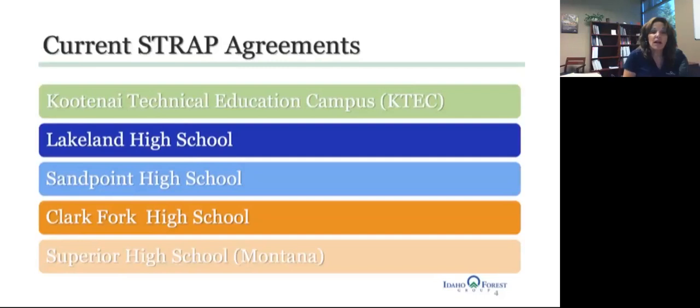First of all, there must be a School to Registered Apprenticeship agreement signed between the high school and the employer. For the student, they must be in good academic standing—both their grades and their attendance. They must be enrolled in a related career and technical course. Most of our students come from a welding course, a diesel course, or industrial mechanics. The student's parent or guardian must sign the agreement. The student must always be under the supervision of a journeyman, and the employer must enroll the student in RAPIDS, which is the database that we use to track apprentices. Next slide.